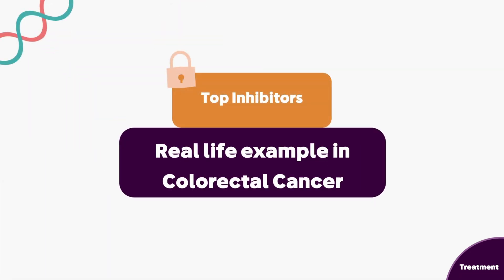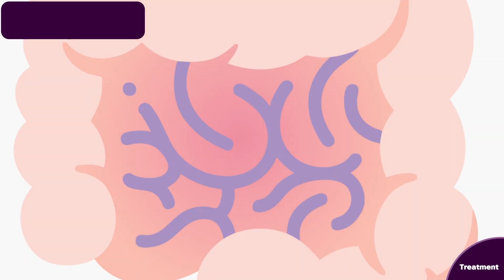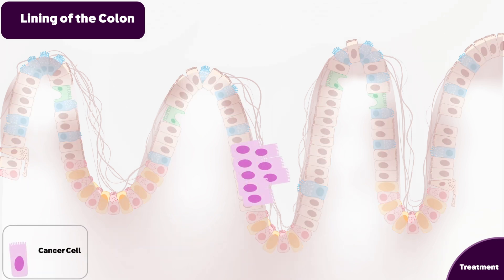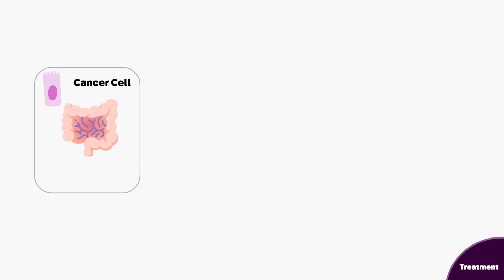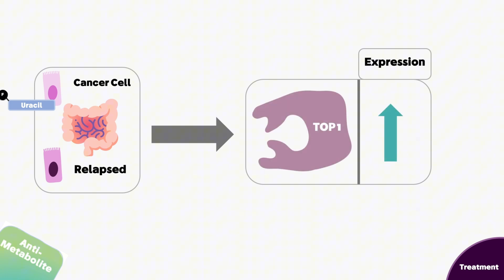Now let's move to a real-life example: the application of topo inhibitors in colorectal cancer. The colon and rectum are crucial organs of the digestive system. The lining of the colon has different cell types, and if a tumor arises in the epithelial cells of the colon, those cells upon division will form a polyp or tumor.